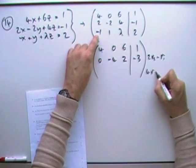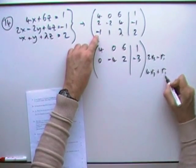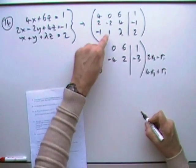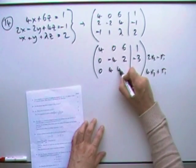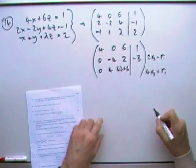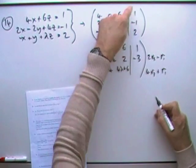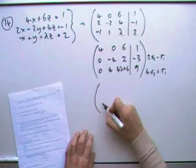Now I'll have to do 4 of row 3 and add row 1 to get that down to a 0. So I've got 4 for that part and I've got 4λ + 6, and here I've got 8 + 1 is 9.